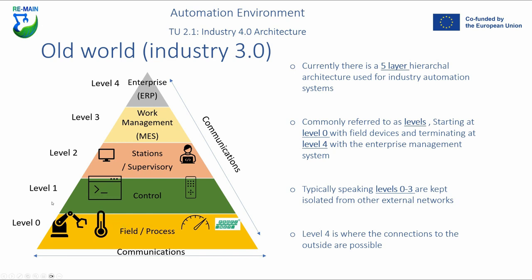In terms of operational technology, levels zero, one, and two primarily fully encompass the operational technology environment. Between levels two, three, and four, informational technology may come into play. Keep in mind: operational technology — the technology related to actual manufacturing processes — covers levels zero, one, and two; while information technology, primarily around data management and communications, covers levels two, three, and four.